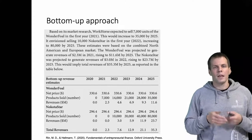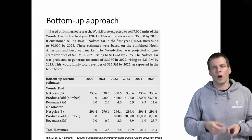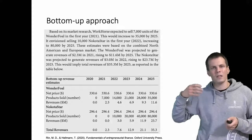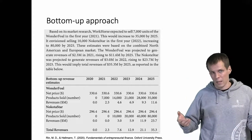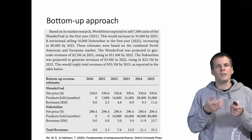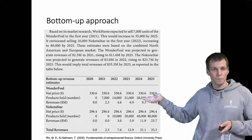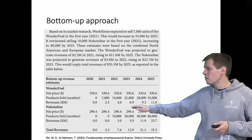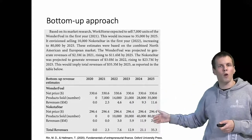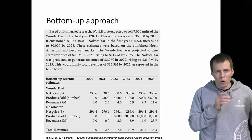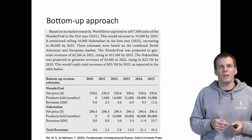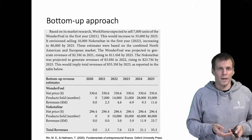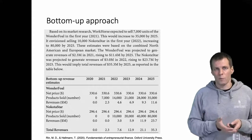The bottom-up approach takes a micro perspective on how much we can produce and sell. For example, you consider how many customers we have now, how much those customers are buying, how many new customers we could attract each year, and whether we could sell more to existing customers. You look at the number of products sold multiplied by the average net sales price, and that gives you revenues — on a product-by-product basis. So where top-down is market by market, bottom-up is product by product. Quite often you would do both if possible, compare the projections, and make an informed choice about which projections to apply.